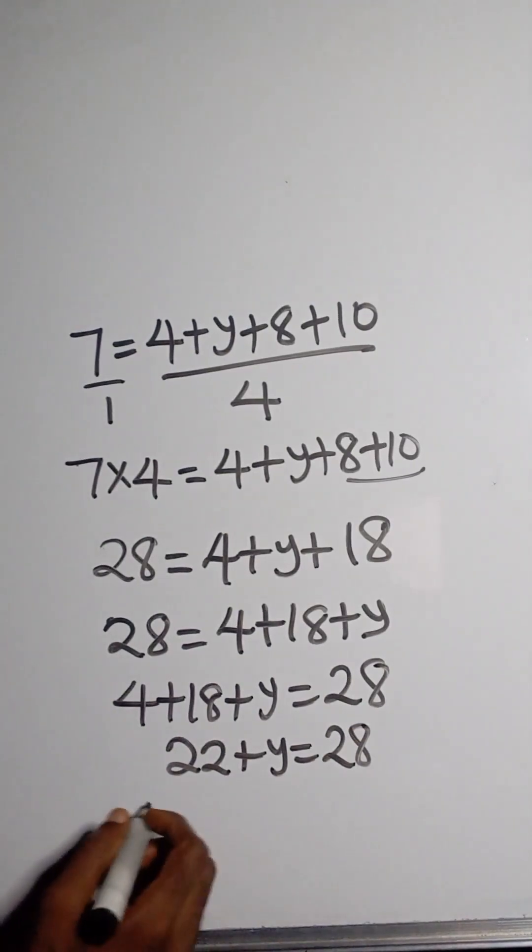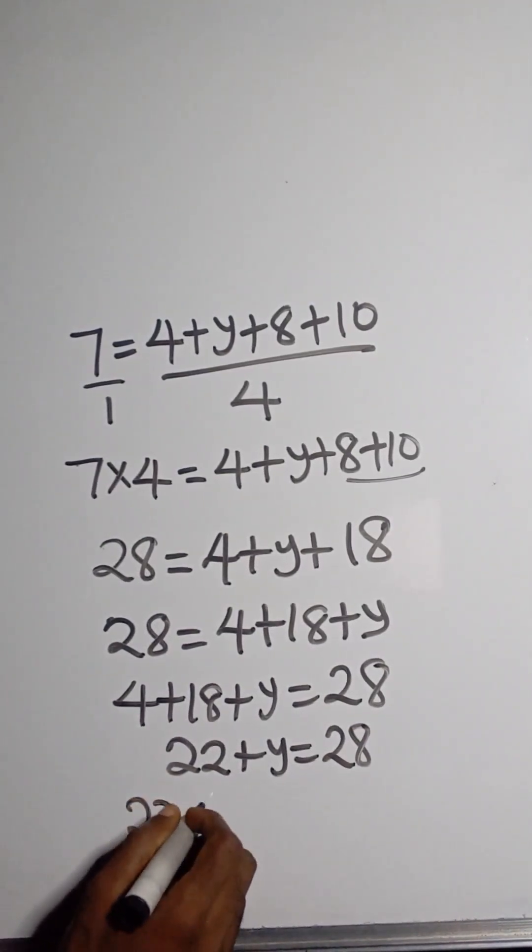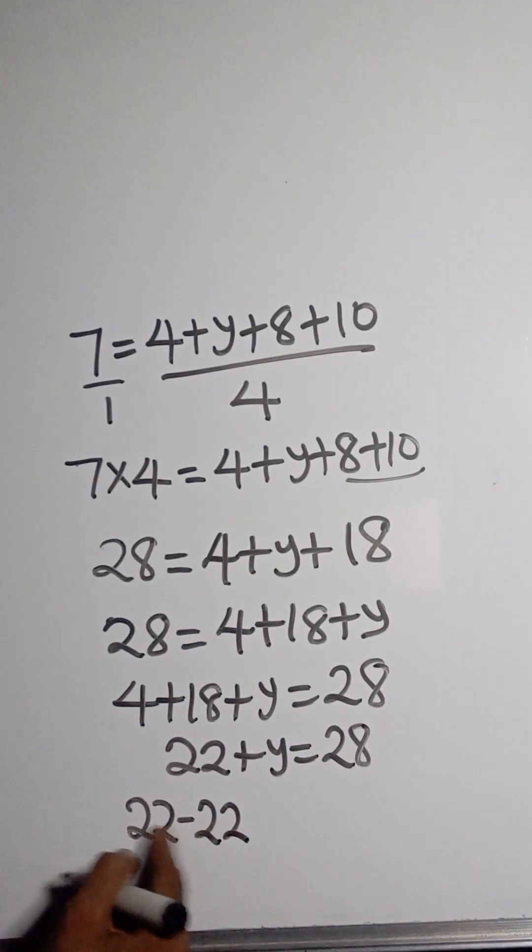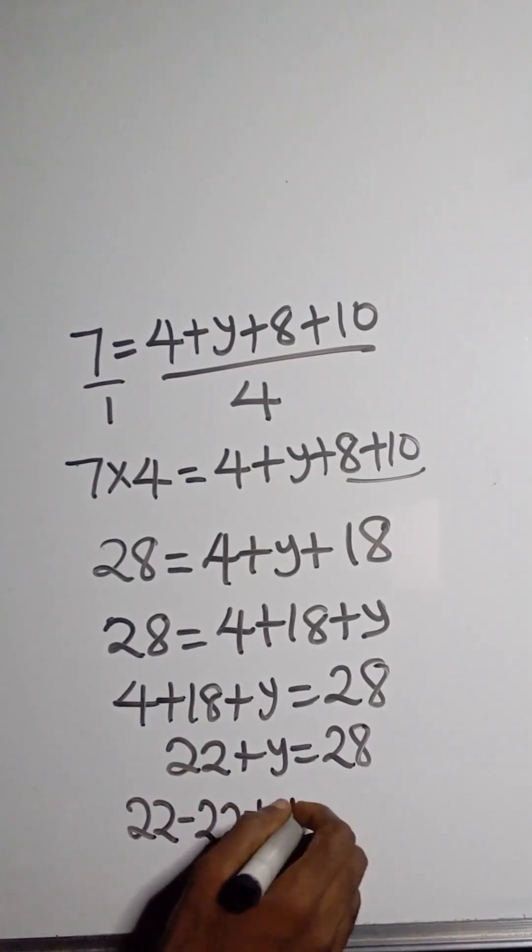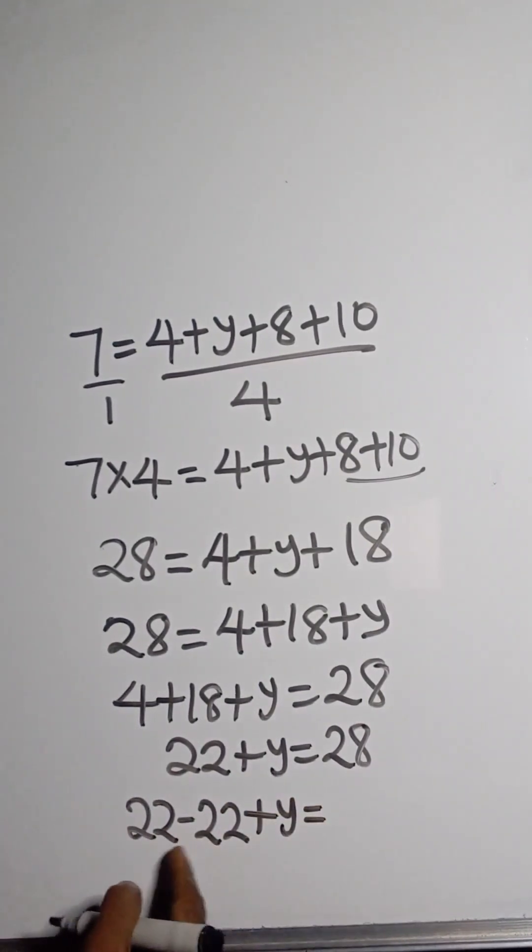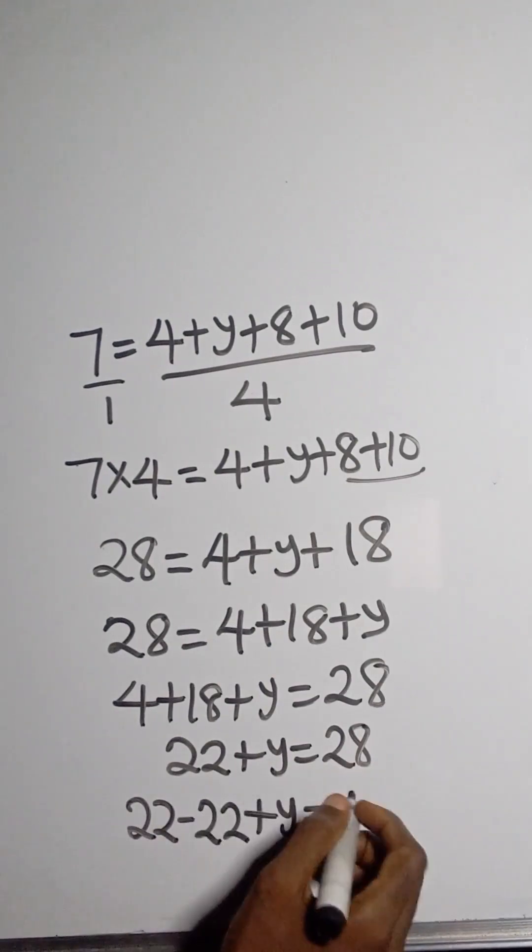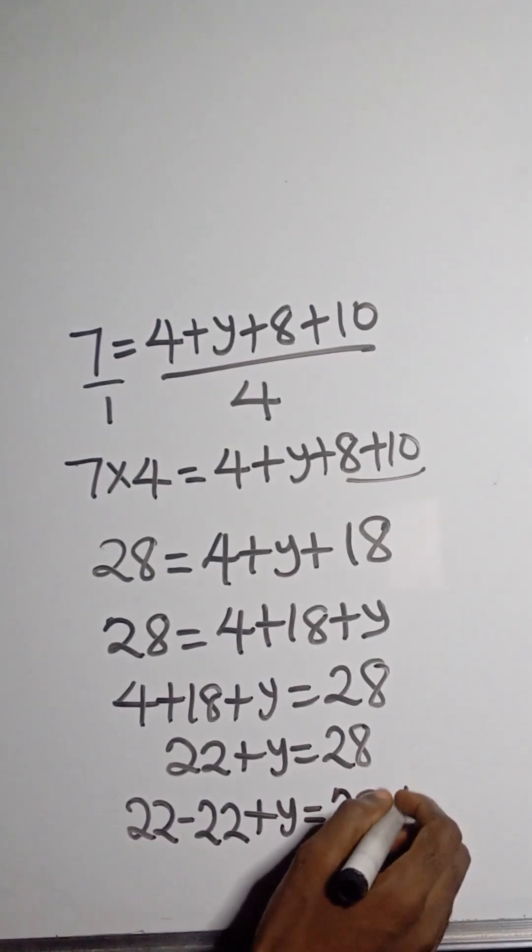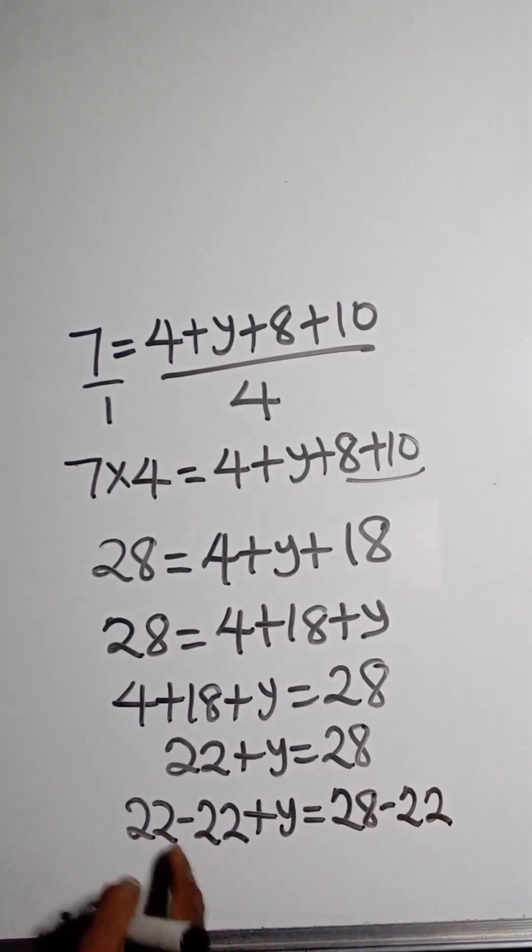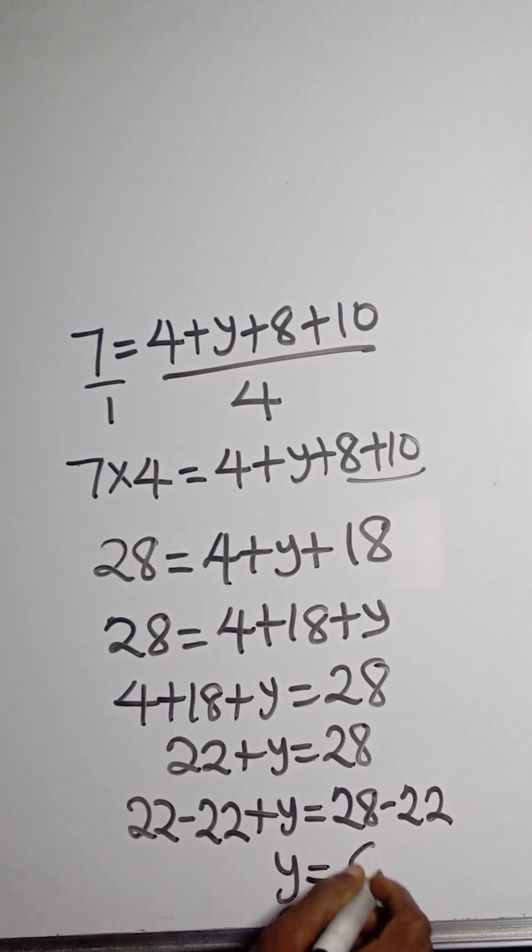Now how do we look for y? So we'll subtract 22 from this side so that this gives us 0 plus y. So since I'm subtracting this here to create a balance, I have to subtract 22 here. So what remains, we have y is equal to 6.